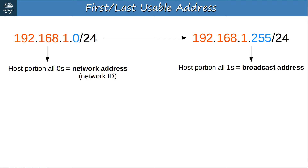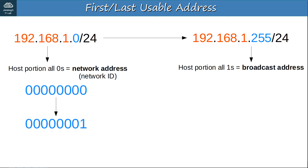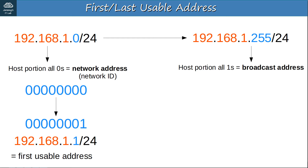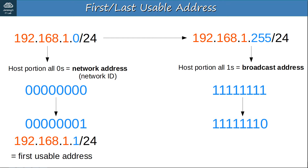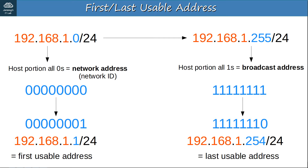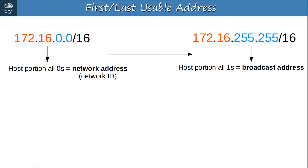Now let's calculate the first and last usable addresses for this class C network, 192.168.1.0. The address with a host portion of all 0s is the network address, or network ID. Add 1 by changing the last bit of the host portion to 1, and you get 192.168.1.1 — that is the first usable address on the network. Add 1 to the network address to get the first usable address. For the last usable address, the address with a host portion of all 1s is the broadcast address. Subtract 1 from this address and you get 192.168.1.254, which is the last usable address.